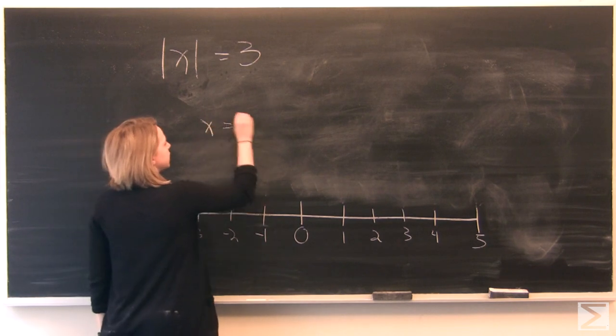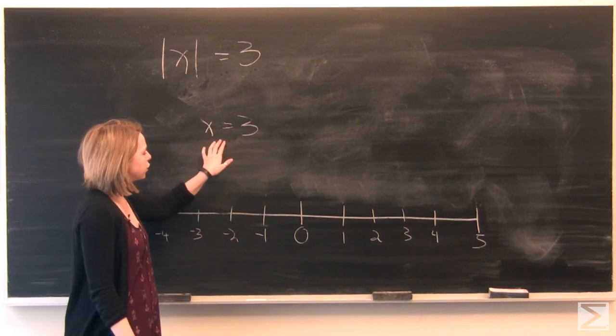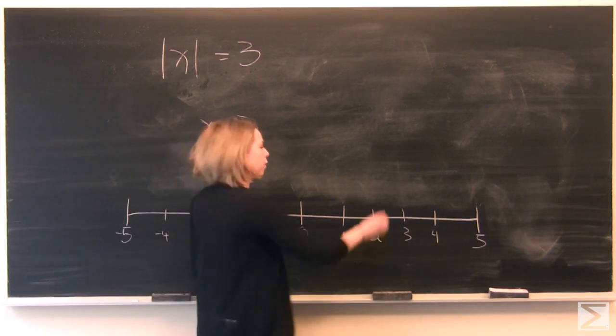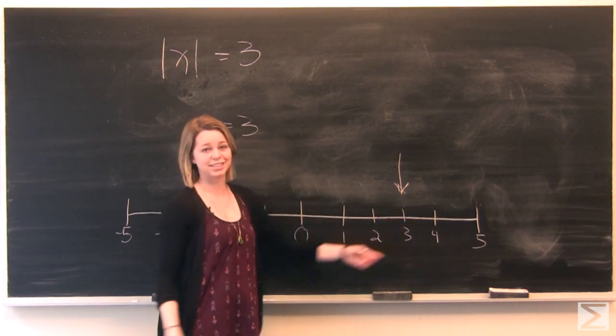If you see an expression like this, just a normal x equals 3, you know that you're identifying where that x is on the number line, and your x is equal to 3.